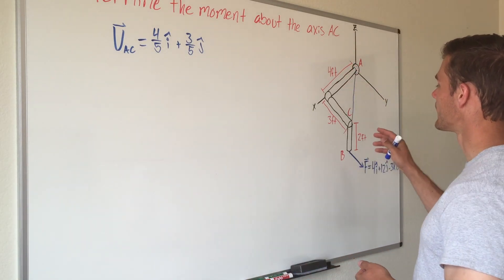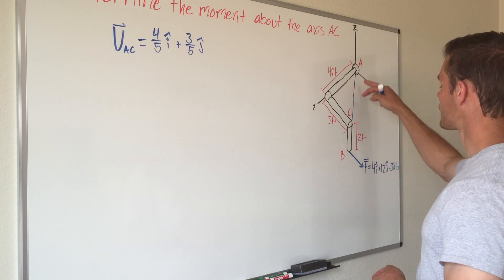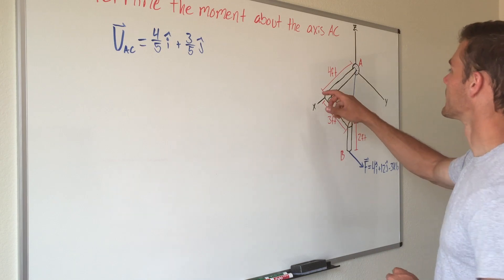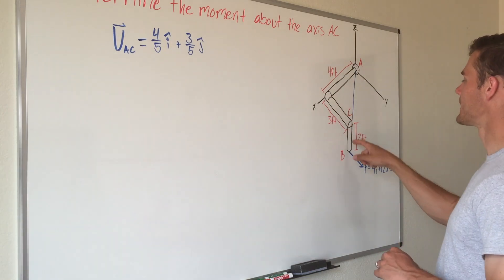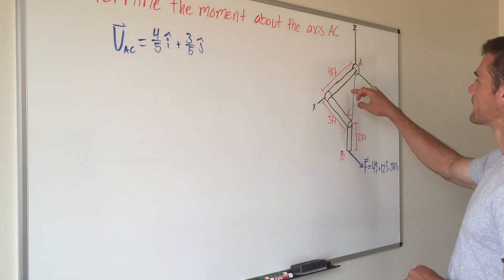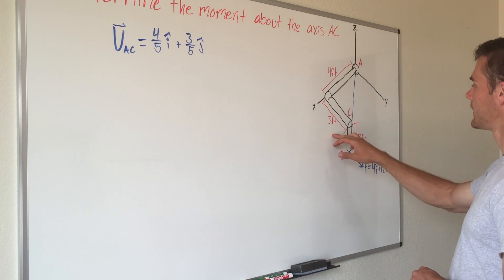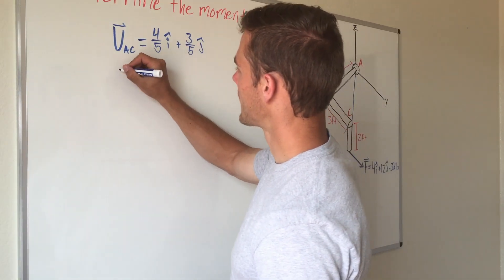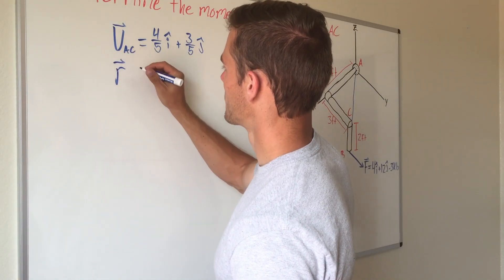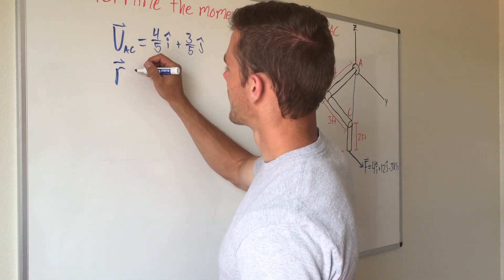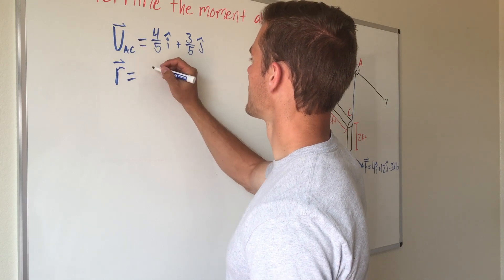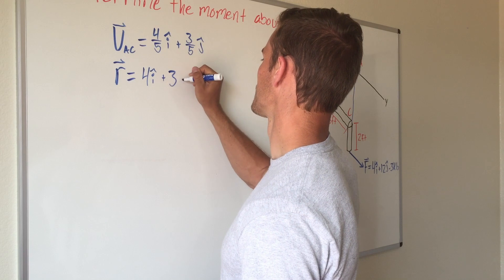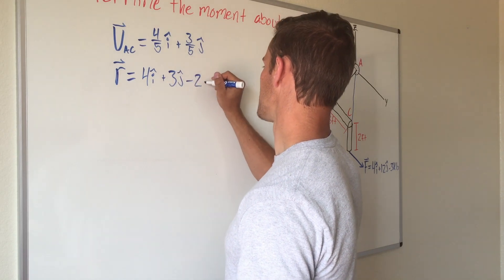Now what we want to do is find our moment arm that goes from point A to point B. That's going to be pretty simple because we have our pipe representing that. It's going 4 feet in the x direction, 3 feet in the y direction, and negative 2 feet in the z direction. So we're just going to write that out as our moment arm vector: 4i plus 3j minus 2k.